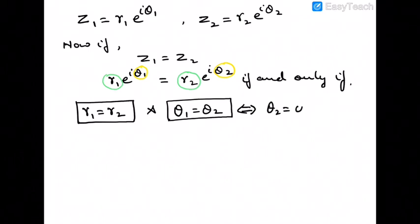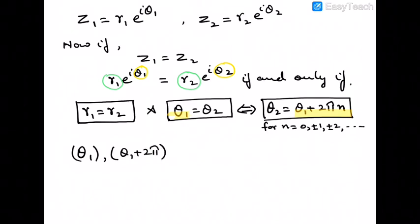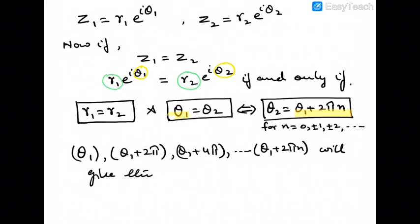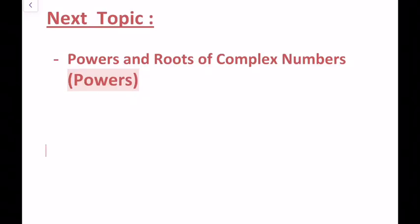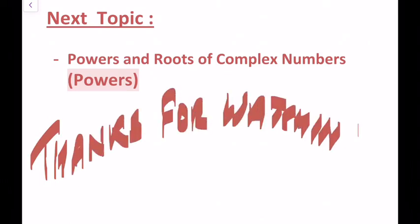This holds for n = 0, ±1, ±2, ±3, and so on. The values θ₁, θ₁ + 2π, θ₁ + 4π, ..., θ₁ + 2πn all give the same result, hence the same complex numbers. In the next video we will be covering powers and roots of complex numbers. Thanks for watching.